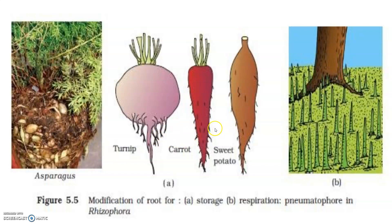The hanging structures which support a banyan tree are called prop roots. The stems of maize and sugarcane also have supporting roots coming out of the lower nodes of the stem, called stilt roots. In some plants such as Rhizophora, which grow in swamps, many roots come out of the ground and grow vertically upwards. Such roots are called pneumatophores and they help the plant obtain oxygen for respiration.